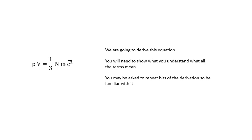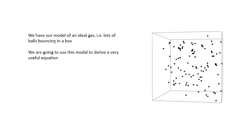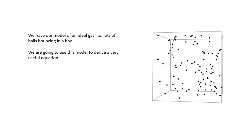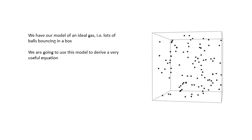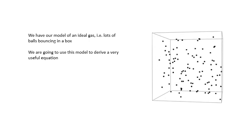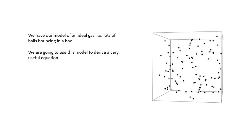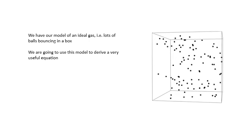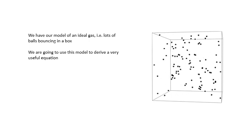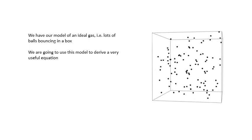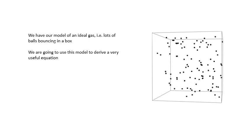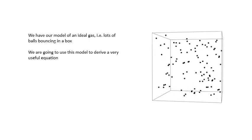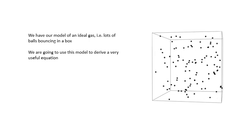There's quite a few different stages to this. So this is our ideal gas. This is Kinetic Theory. It's a model of an ideal gas, lots of balls bouncing around in a box, and we're going to have to make some assumptions. And you should learn these assumptions. I've seen questions where it says, state two of the assumptions made in Kinetic Theory. So learn these assumptions. There are four of them.